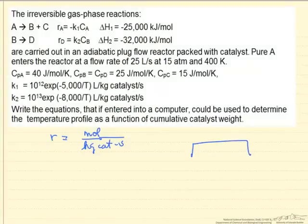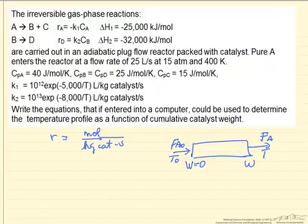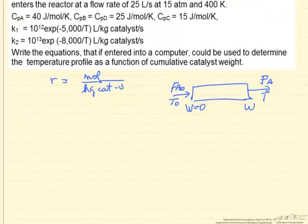So we have a plug flow reactor. We're going to use weight of catalyst as our variable, so the weight is zero and we have some total weight. We don't know the size of the reactor. We want to just know how the temperature varies as a function of cumulative catalyst weight. We have A flowing in at some temperature, and of course it's going to be leaving at a different flow rate and a different temperature. So we're going to write down the mass and energy balances that we need.